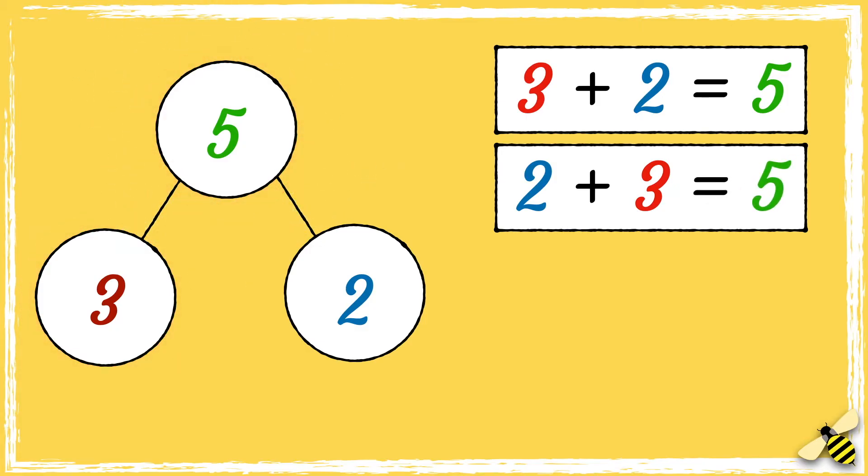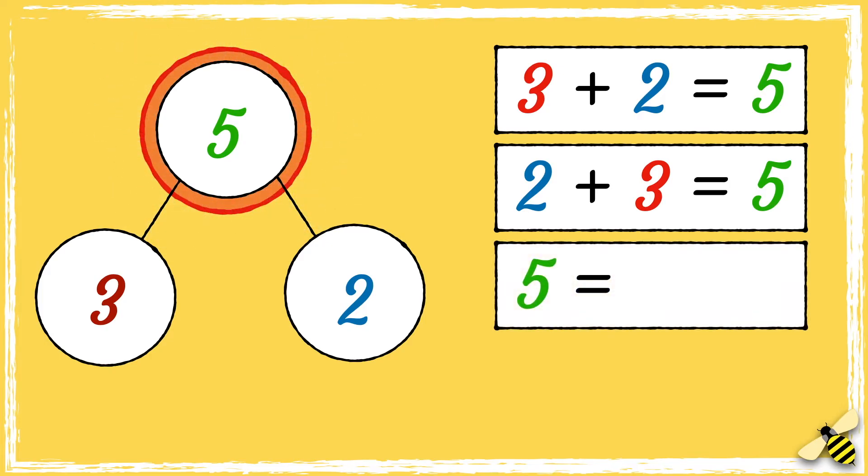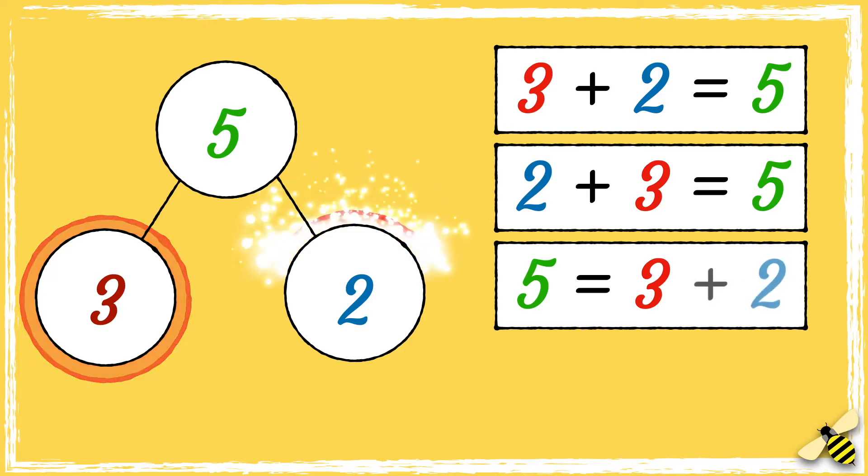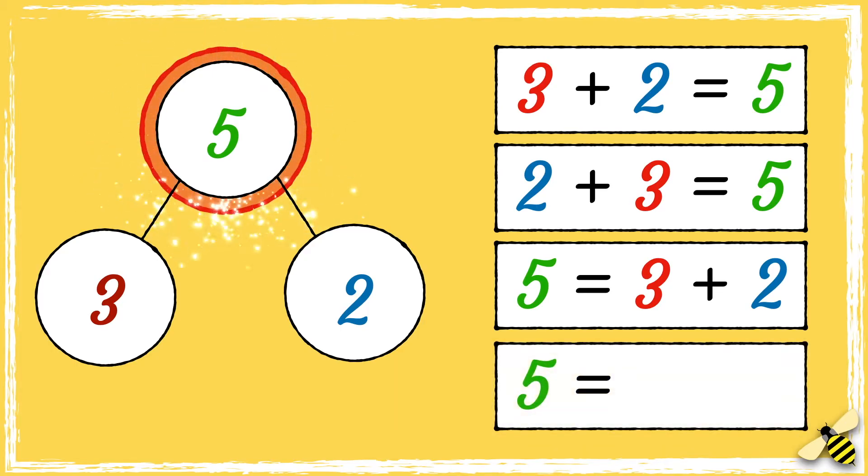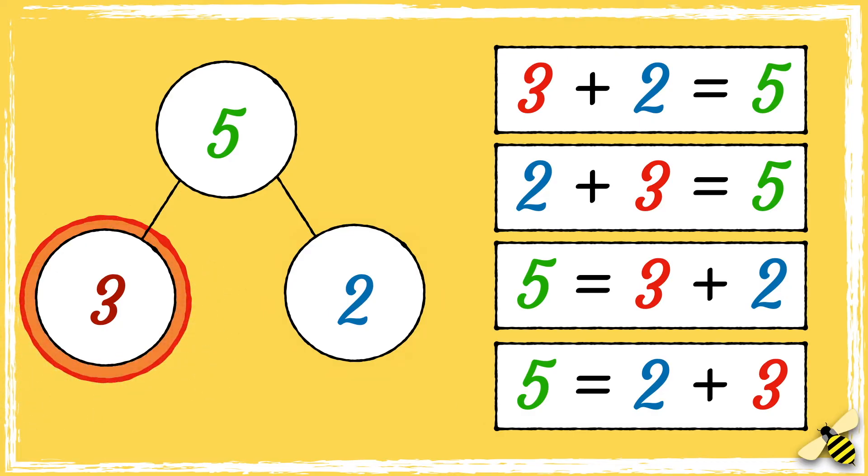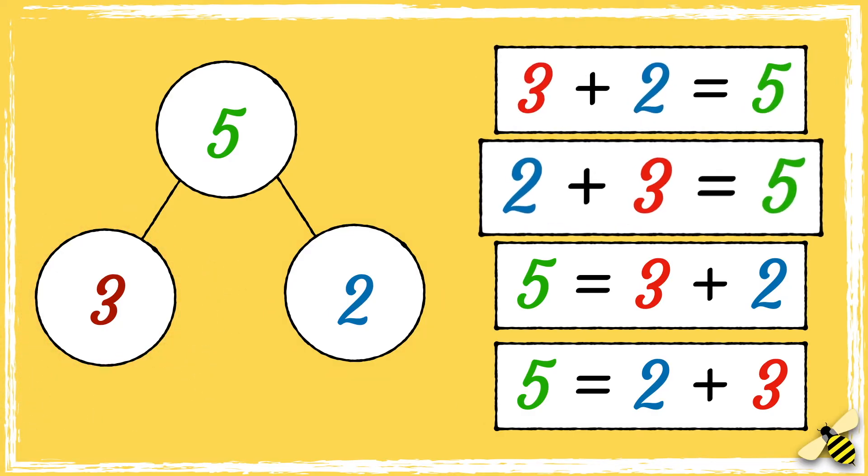We could flip it around and say that 5 is equal to 3 add 2, or we could say that 5 is equal to 2 add 3. This is an addition fact family for this part-whole model.